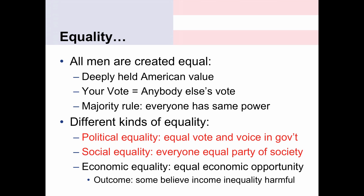First is political equality, which simply means everybody's vote counts the same — everybody has an equal chance to vote and an equal voice in government. There's also social equality, which means everybody has an equal part of society. This was the defining feature of segregation in the South and is what the civil rights movement was struggling to achieve — the idea that everybody can live in any neighborhood or go to any school they want. Finally, there's economic equality, meaning equal economic opportunity. Some people distinguish between equal outcome and equal opportunity, and some care very much about income inequality.